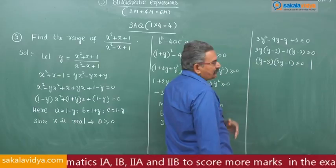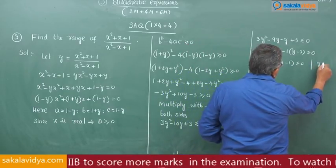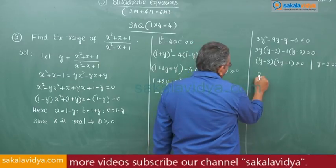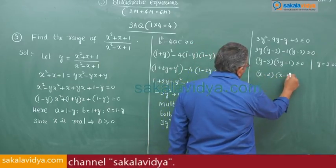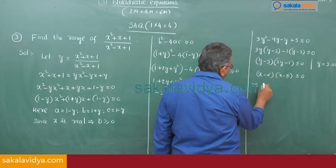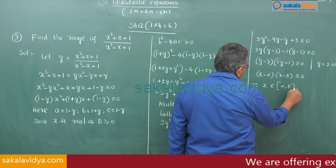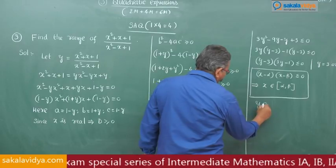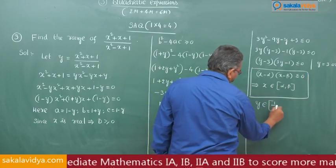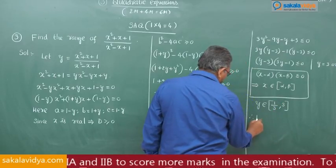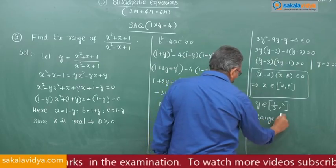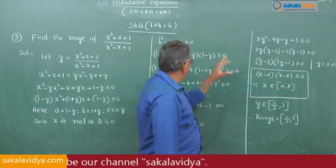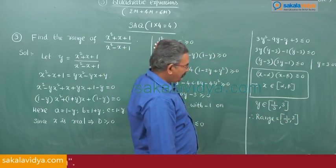So (y - 3)(3y - 1) ≤ 0. The roots of the corresponding quadratic equation are y = 3 or y = 1/3. Using the formula: (x - α)(x - β) ≤ 0 implies x ∈ [α, β], the range is y ∈ [1/3, 3]. Therefore, the range equals [1/3, 3]. The minimum value is 1/3 and the maximum value is 3.